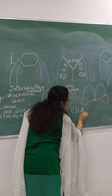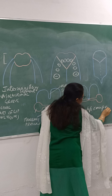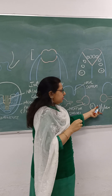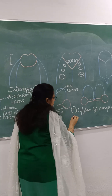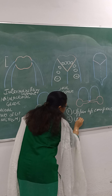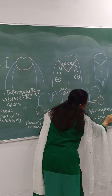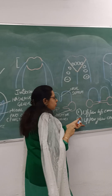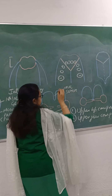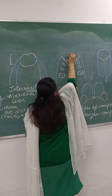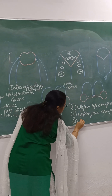The first is the upper lip component, which forms the philtrum of the upper lip. Then there is the upper jaw component, which carries the four upper incisors. The third component is the palatal component.